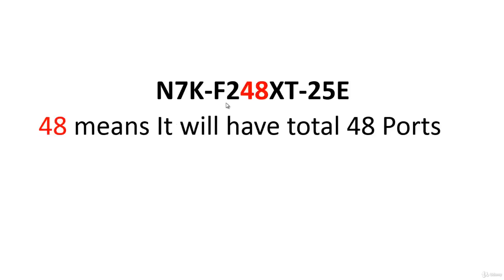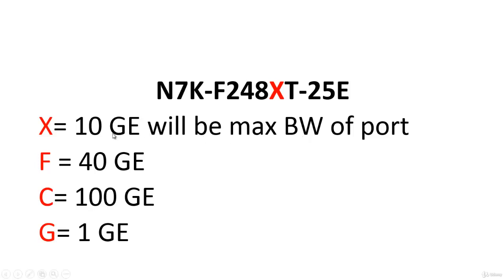48 means the total number of ports will be 48. The letter X indicates port speed — X means 10GE. If it were 40GE, the letter would be F; C means 100GE; and G means 1GE. Note that one line card can have both types of ports, like 10G and 40G, or 40G and 100G. In that case, the largest port speed is used, so a 40G/100G card would show C.